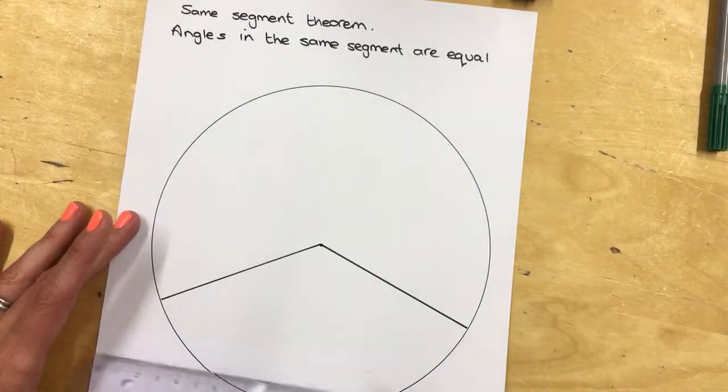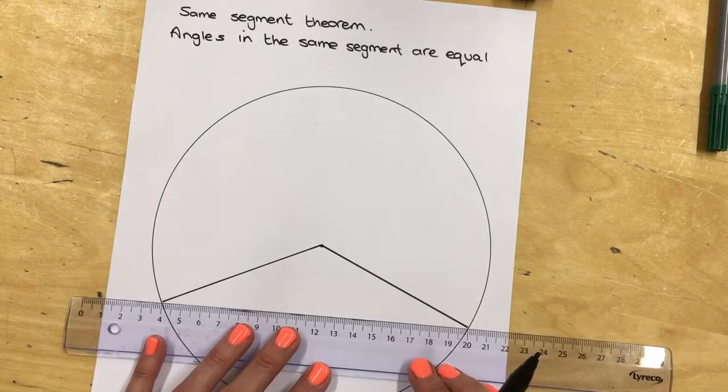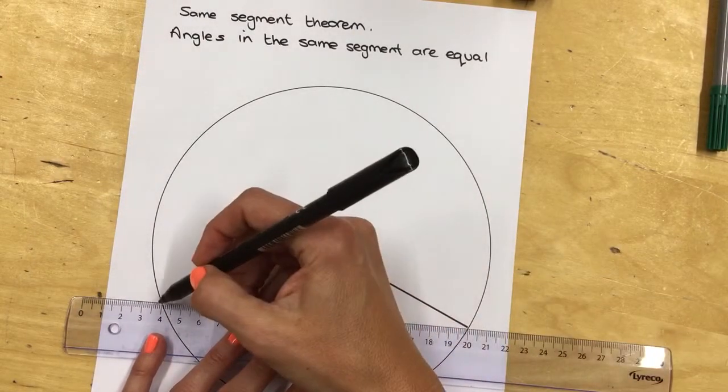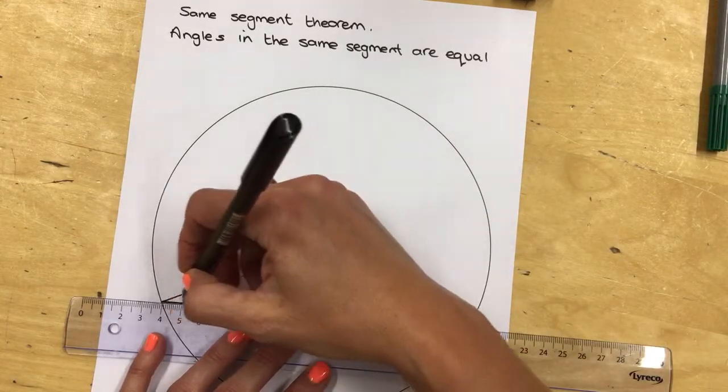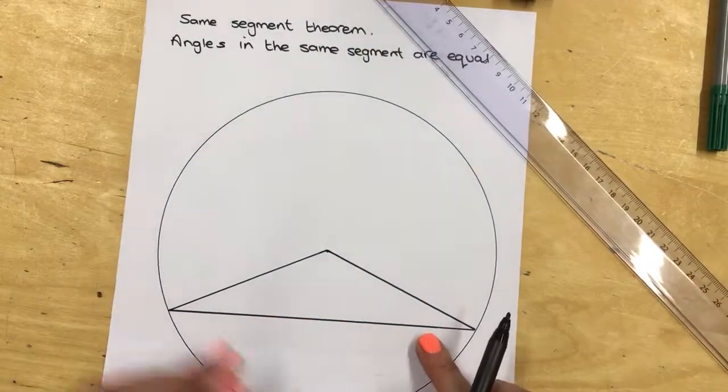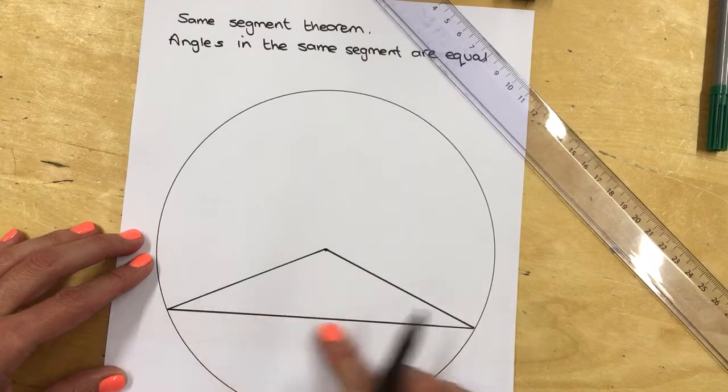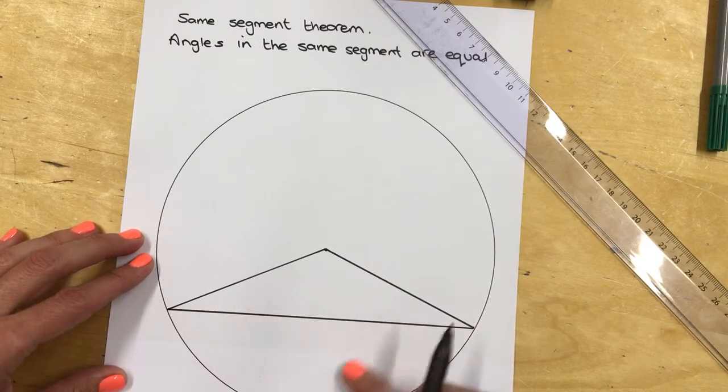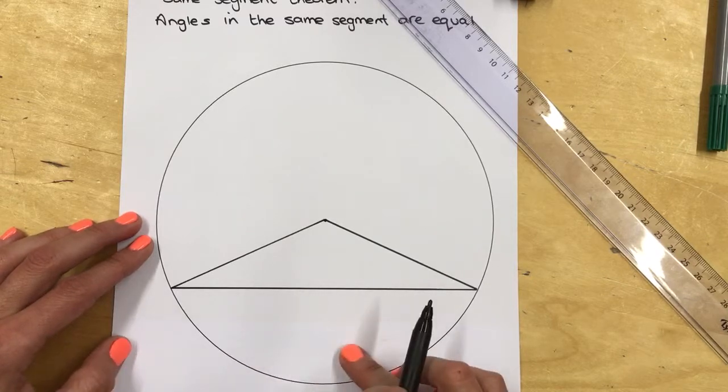And then what we're going to do is we are going to put in a cord which is from one part of the circumference to the other. That's what we call a cord. It doesn't go through the centre. This part was a sector. This is a cord and now this bit here at the bottom is what we call a segment.